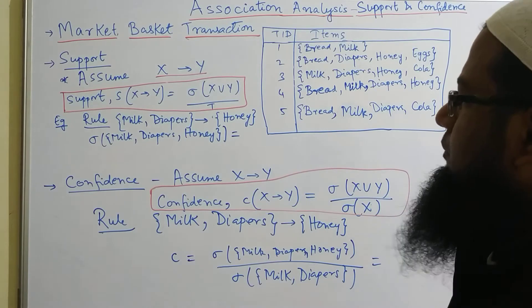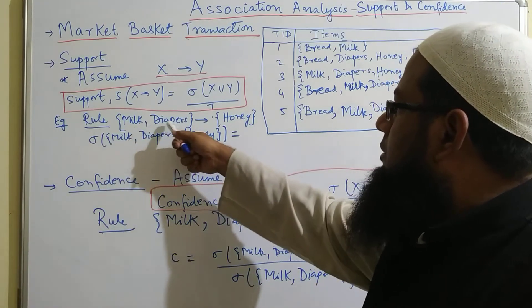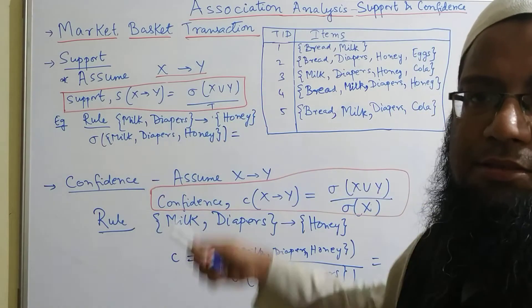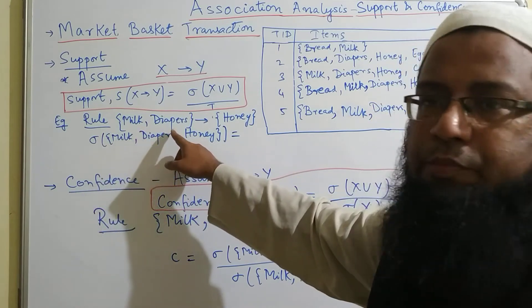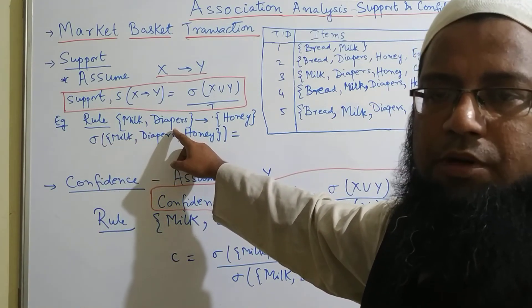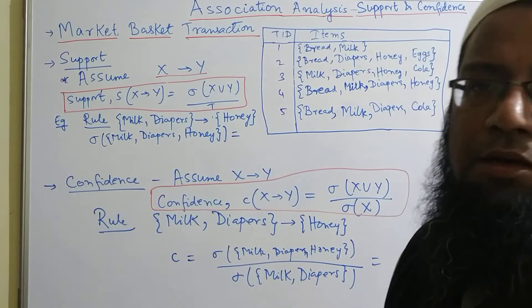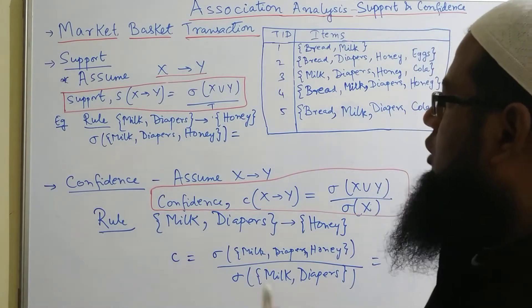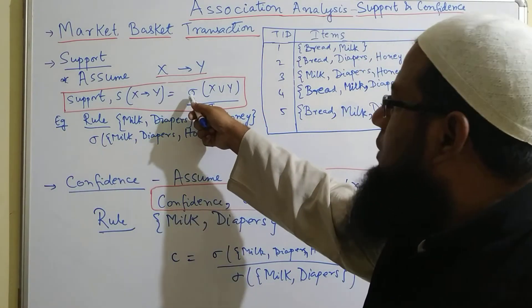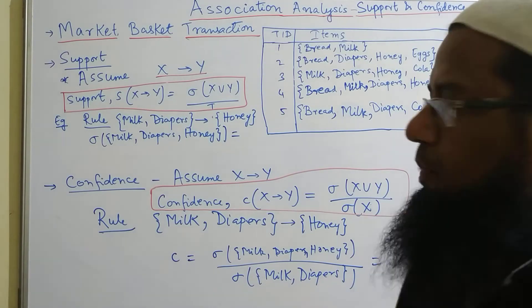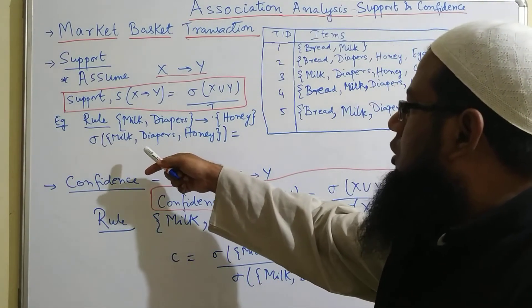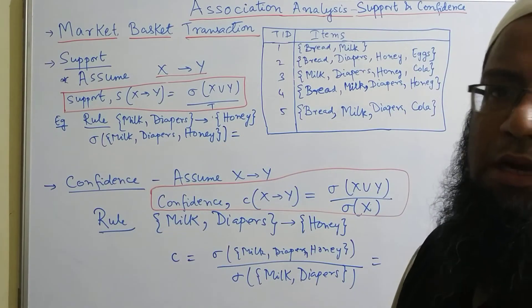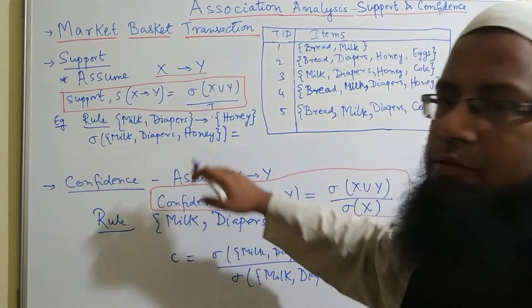Now we take an example where the rule says that milk and diaper implies honey. The meaning is that wherever there is milk and diaper in the transaction, there is honey as well. To find the support, according to the formula we need to find the support count — that means in how many transactions these three items appear together.